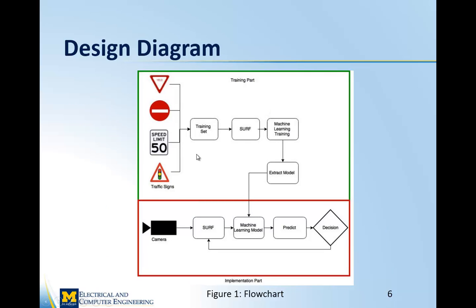This is the design diagram. We have four traffic signs coming in, with 100 images per sign creating a training set data structure. After creating this data structure, all those images are input to a SURF feature detector. The data produced by SURF is input to a machine learning algorithm for training based on labels from each image. After training, we extract an intelligent model, which is then input to the implementation part — an infinite loop where the camera provides a live stream, SURF characterizes each captured image, and the machine learning model predicts what the sign is.